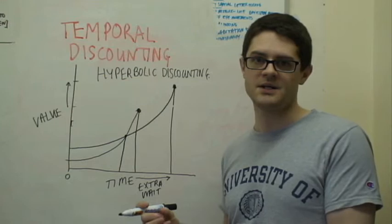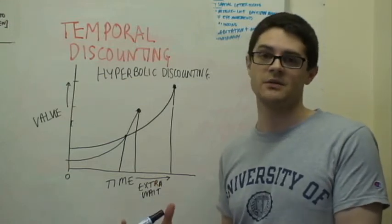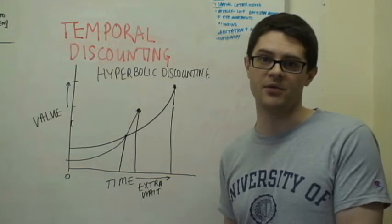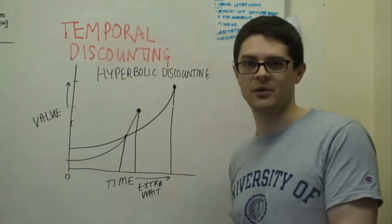And people do this and it's the main reason, it's the main bit of data which says that people aren't optimal. People don't do the normative exponential discounting model.